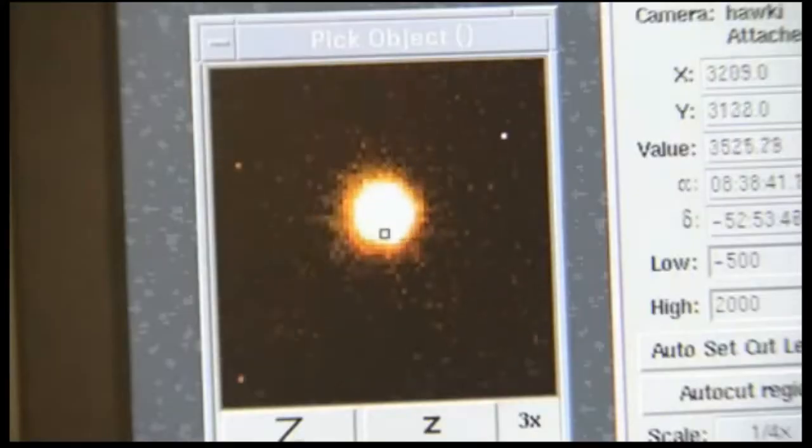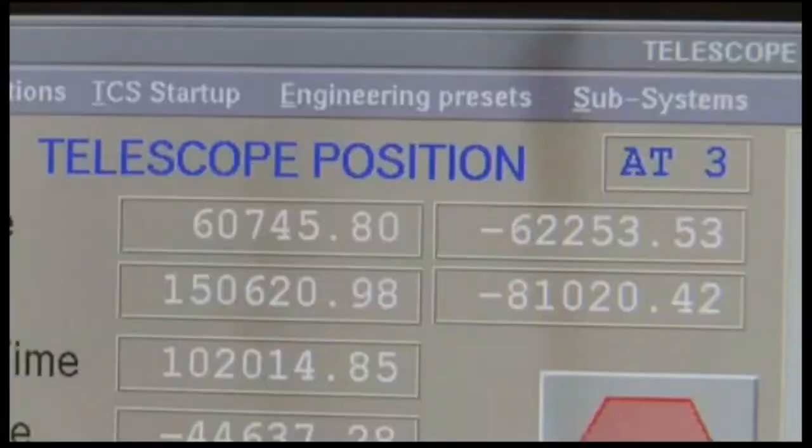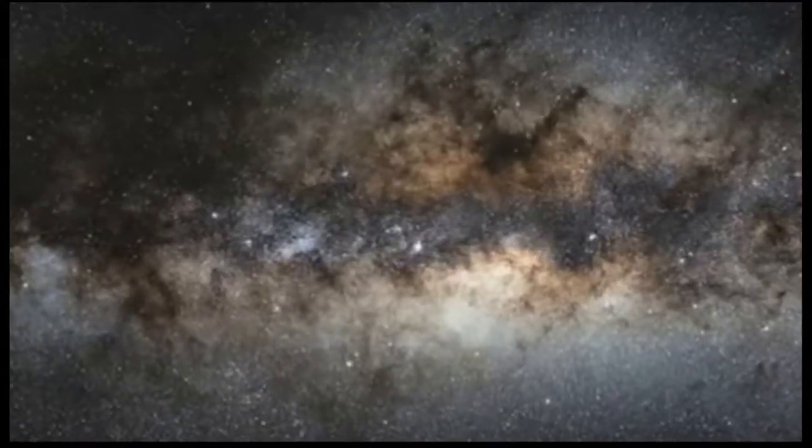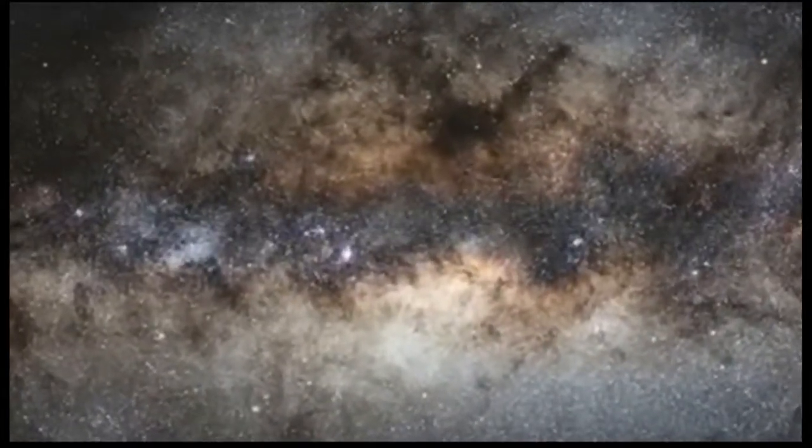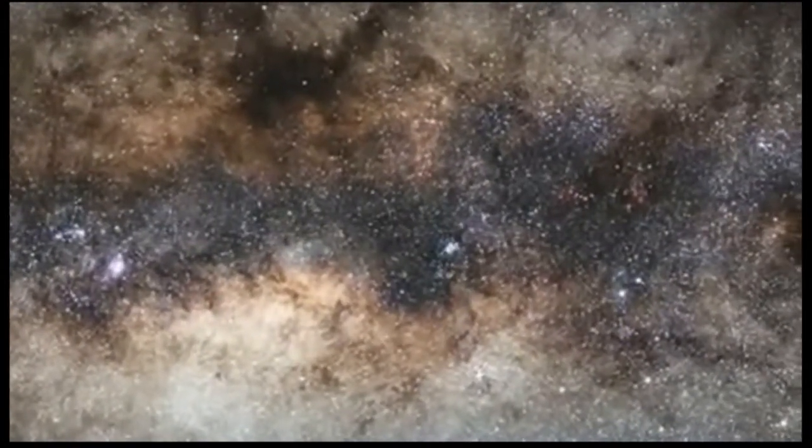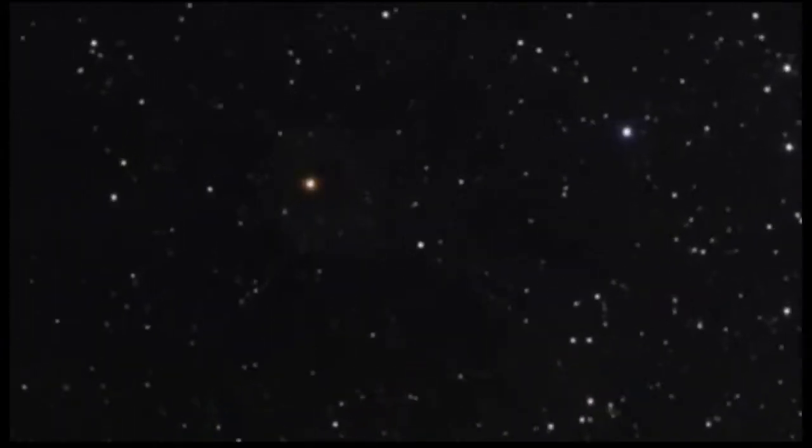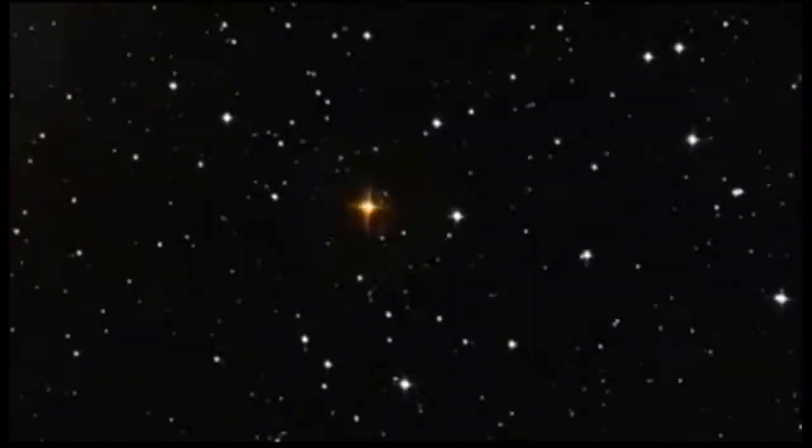The VLT interferometer provides astronomers with the ability to study celestial objects in unprecedented detail. It is possible to study the surfaces of distant stars, to determine the shape of asteroids, or even capture the surroundings of black holes. The VLT interferometer has produced one of the sharpest images ever obtained of a star. The breathtaking sharpness of this image is equivalent to seeing the head of a screw on the International Space Station from the ground.